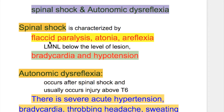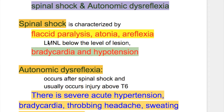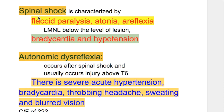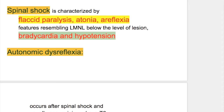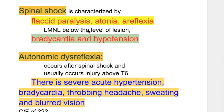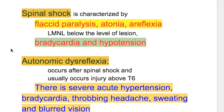What happens in spinal shock? Spinal shock is characterized by flaccid paralysis, atonia, and areflexia — features resembling lower motor neuron type of lesion below the level of lesion. There is also bradycardia and hypotension. Vasomotor failure leads to vasodilatation, venodilatation, and severe hypotension.